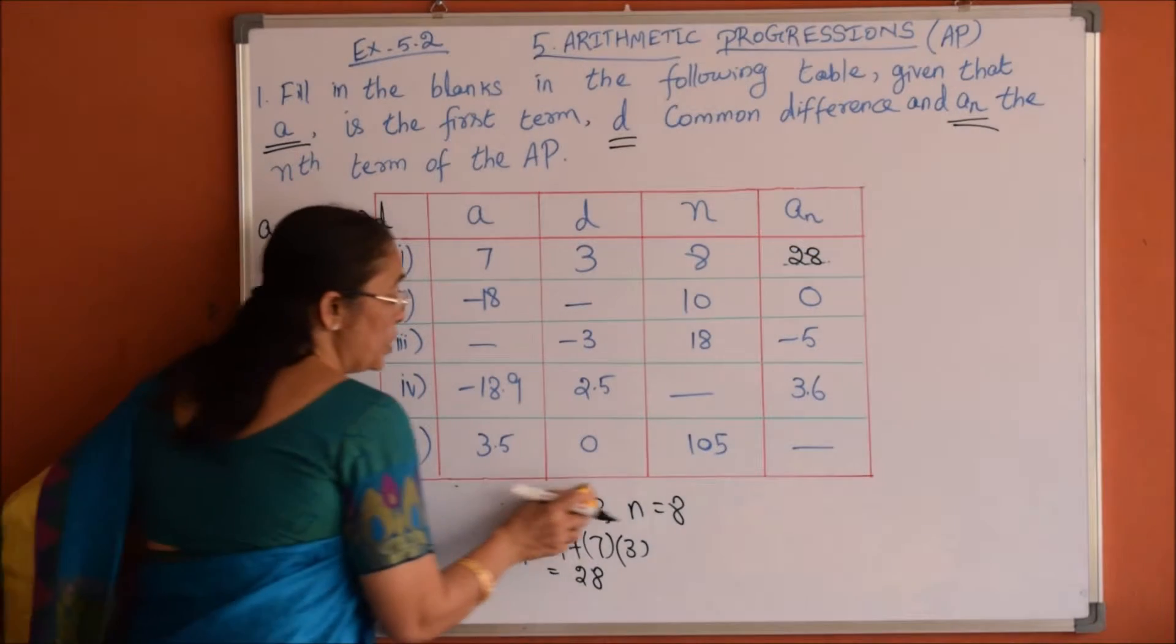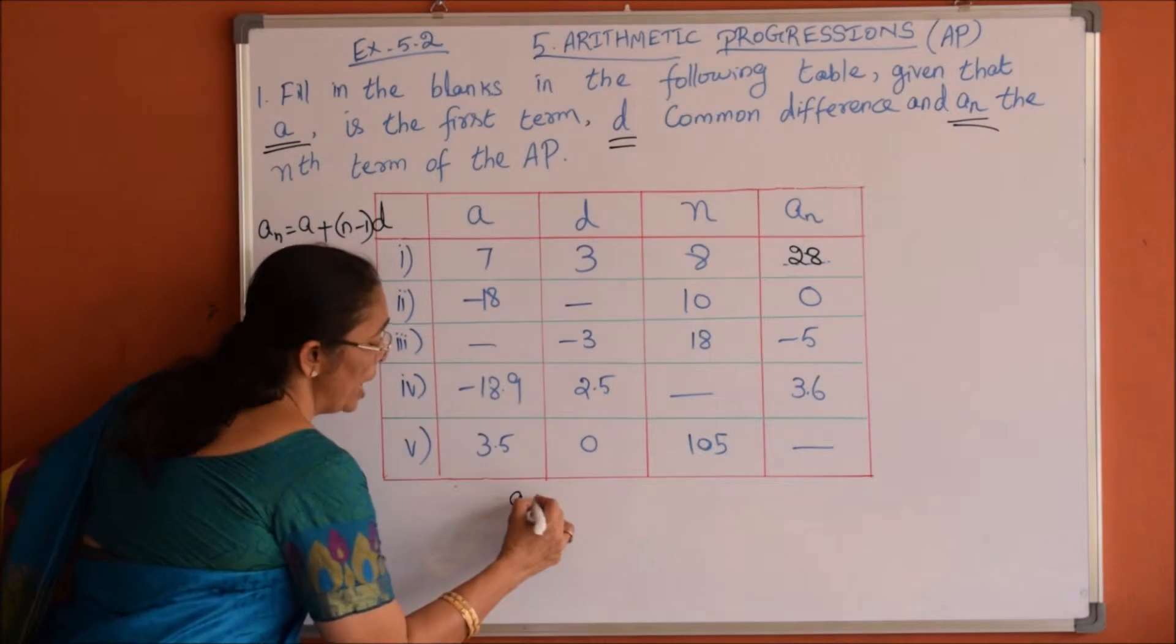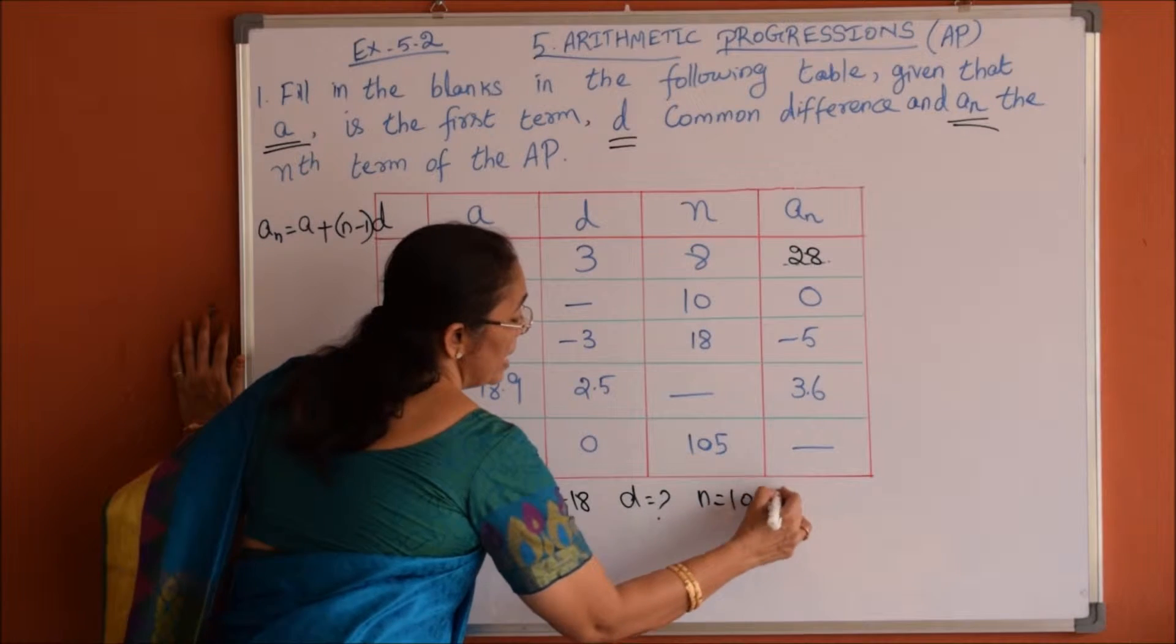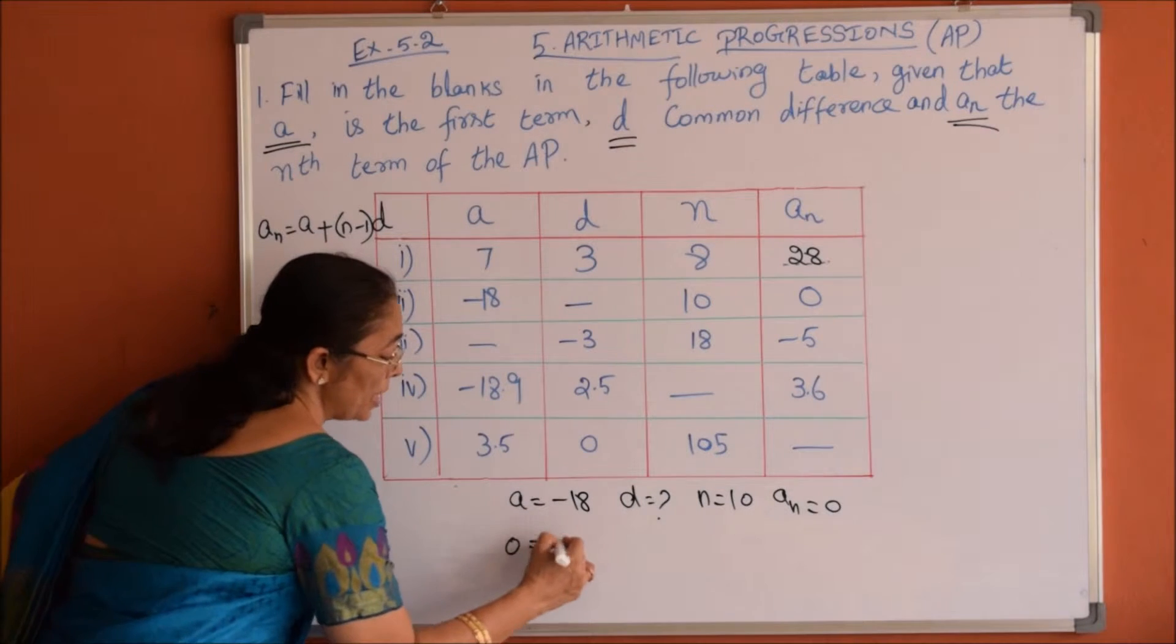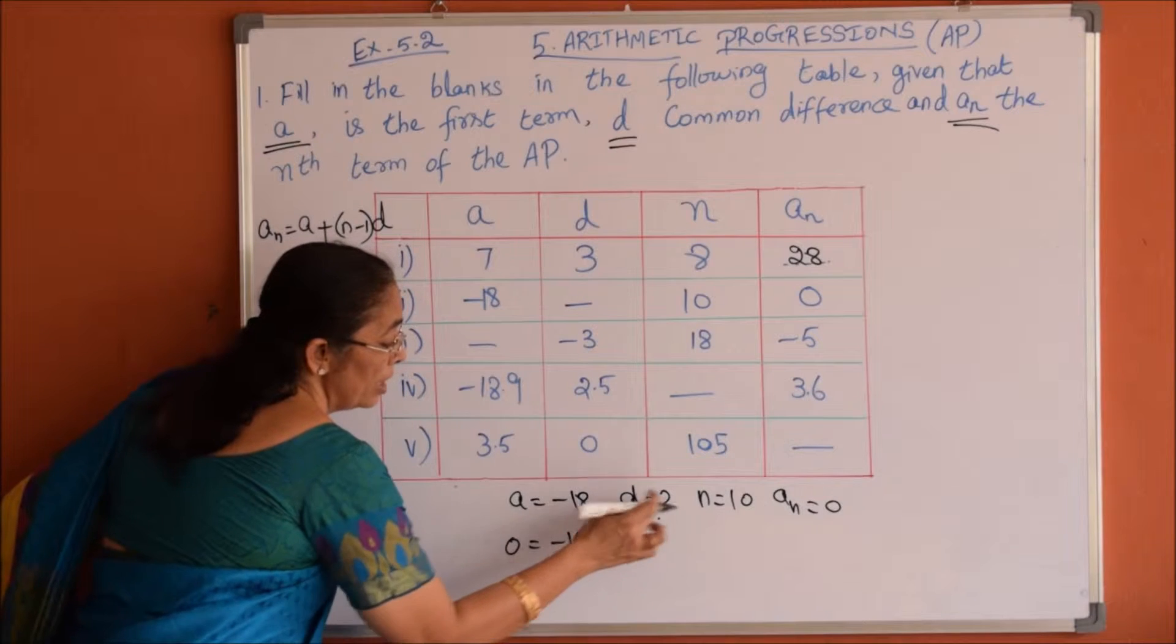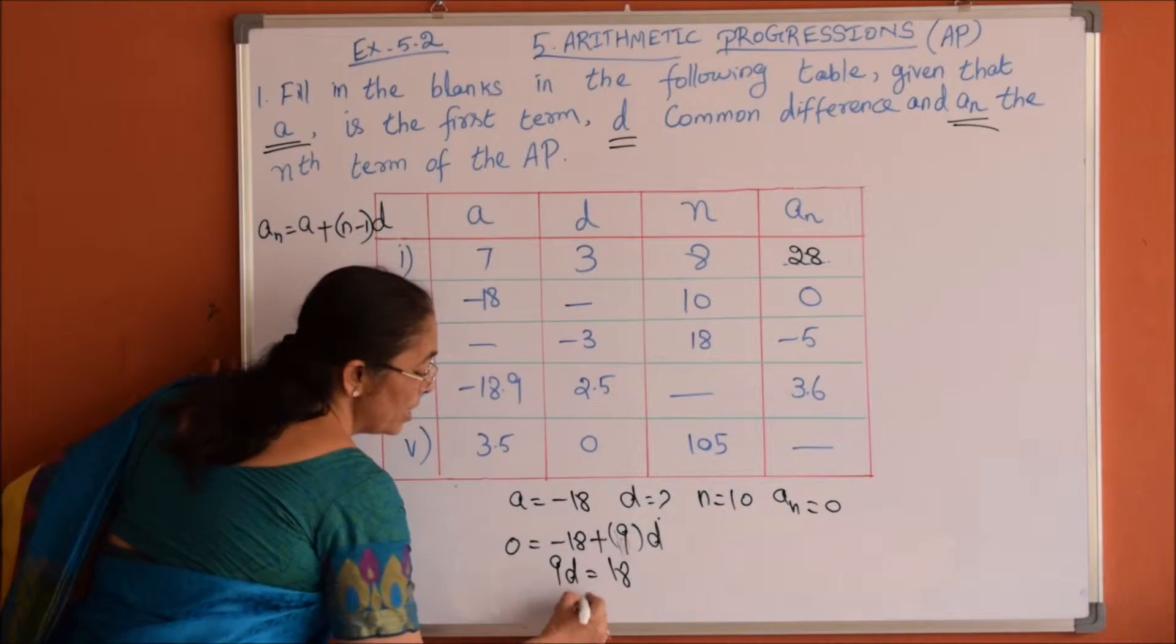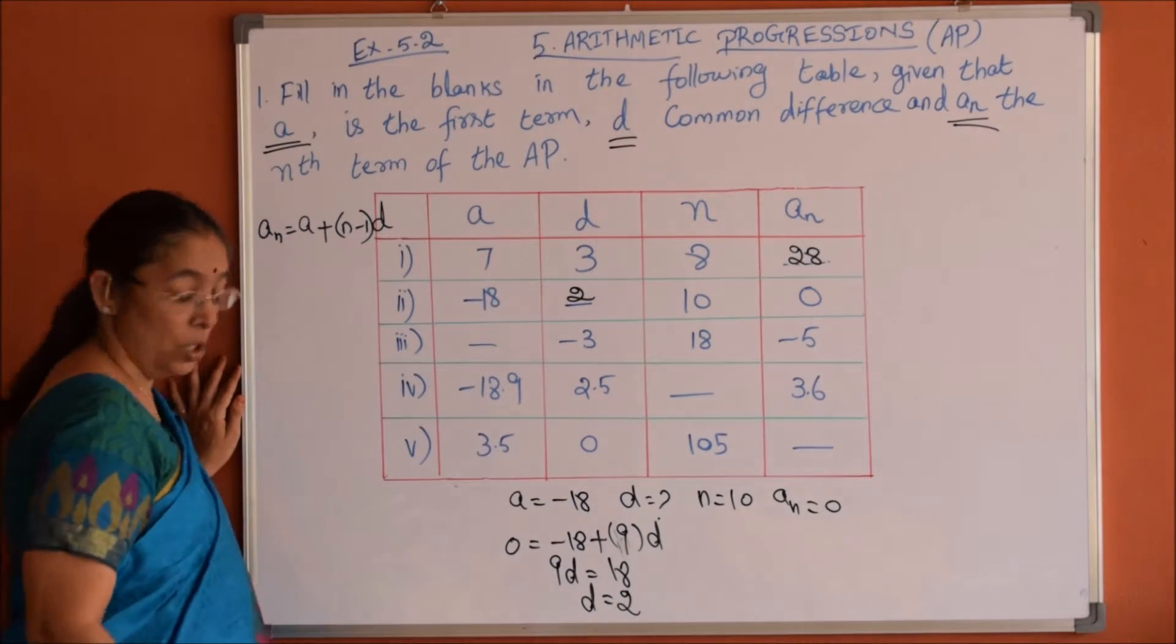Coming to the second problem, a value is given as minus 18, and we have to find the common difference. n is given as 10 and An is given as 0. So An equals 0 equals minus 18 plus (10 minus 1) times d, which gives us 9d equals 18. Therefore, d equals 18 divided by 9, which is 2.